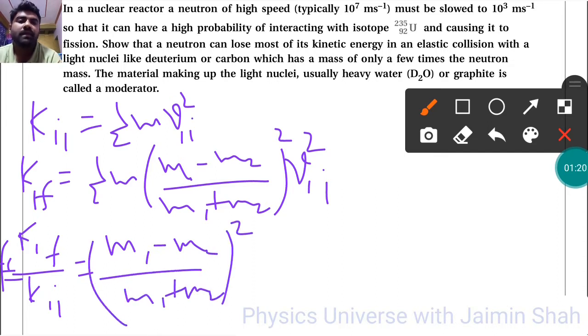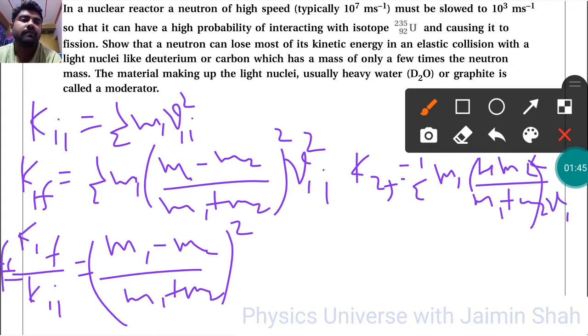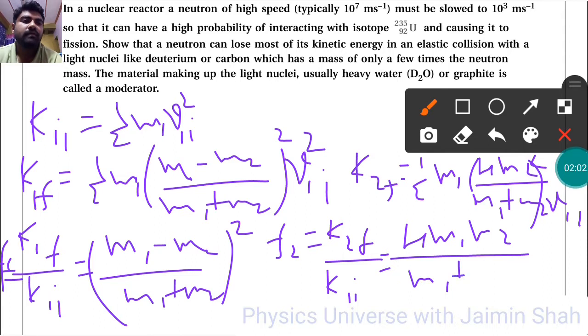For the second particle, K₂f = ½m₂[4m₁m₂/(m₁ + m₂)²]V₁ᵢ². The ratio f₂ = K₂f/K₁ᵢ equals 4m₁m₂/(m₁ + m₂)².